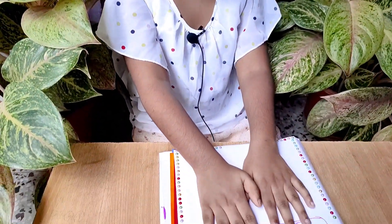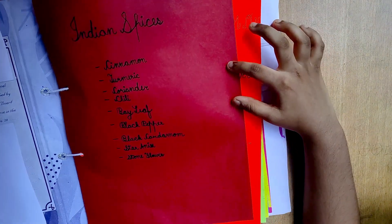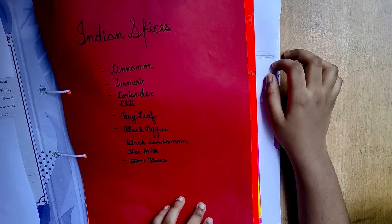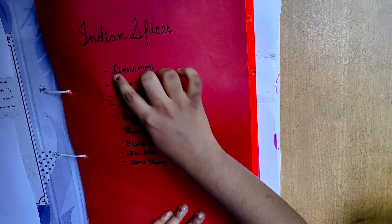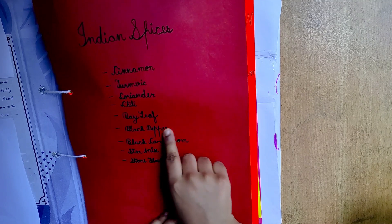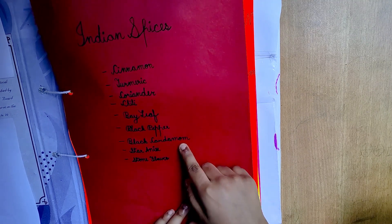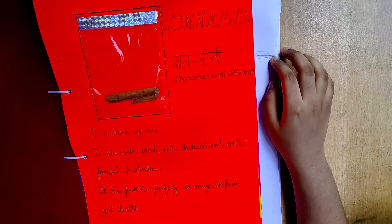The common spices which I have included in my scrapbook I am going to share. In this scrapbook I have included cinnamon, turmeric, coriander, chili, bay leaf, black pepper, black cardamom, star anise, and stone flower. So let's start one by one.